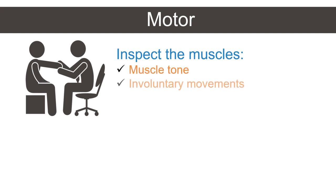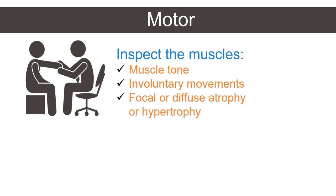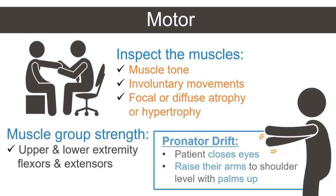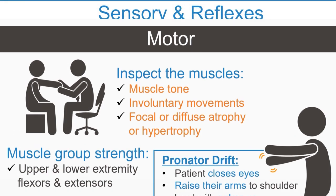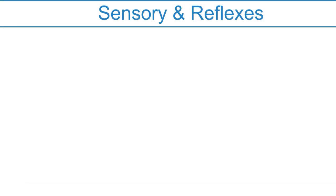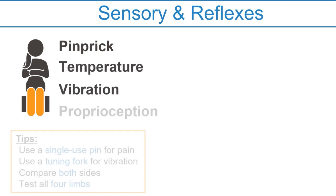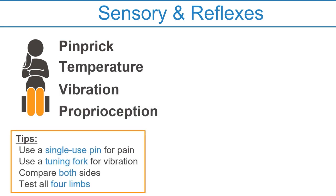For the motor exam, start by inspecting the muscles — assess bulk and tone, look for involuntary movements, and finally test muscle group strength bilaterally. You should also assess for pronator drift. To check sensation, evaluate pinprick, temperature, vibration, and proprioception.